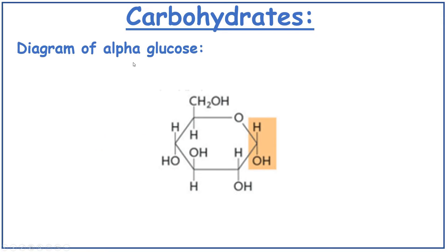Carbohydrates. Here is a diagram of alpha glucose. On alpha glucose, on carbon 1, the hydrogen faces upwards and the OH faces downwards. It's a hexosugar, so you've got carbon 1, 2, 3, 4, 5, 6 carbons.